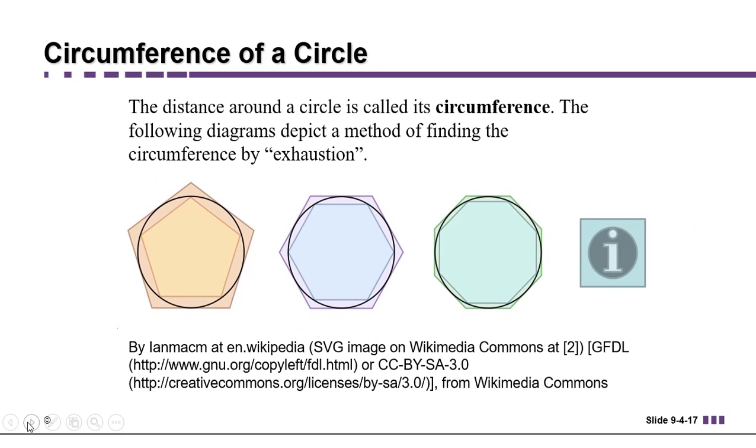And the more sides the polygon had, the more accurate we got the circumference of the circle. Mathematicians who worked on this would literally look at polygons that had a hundred sides. It was called the method of exhaustion.